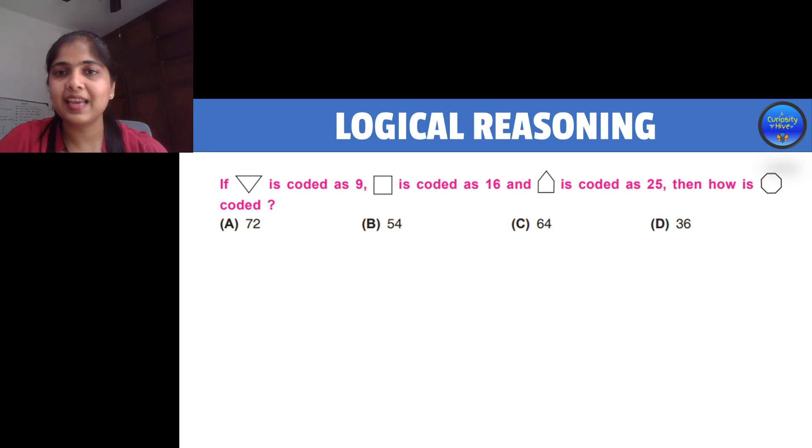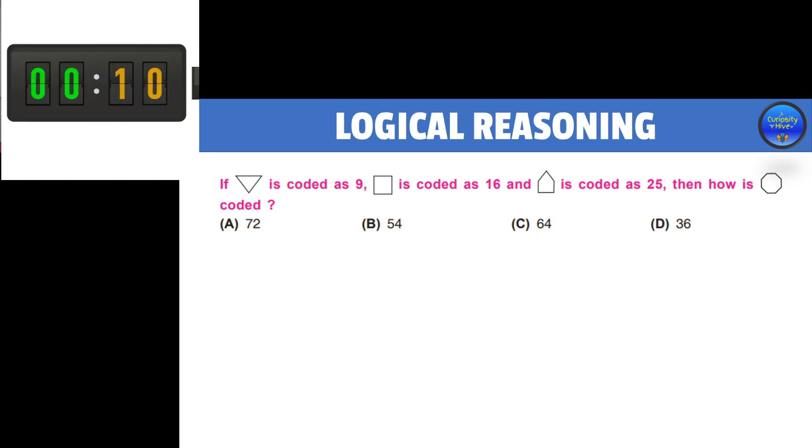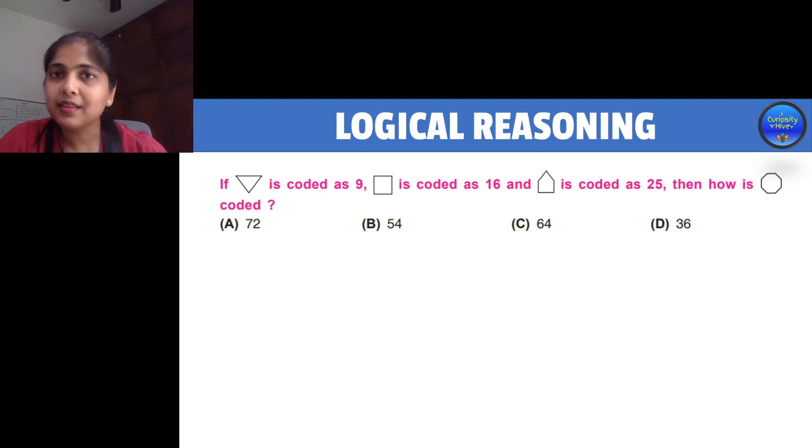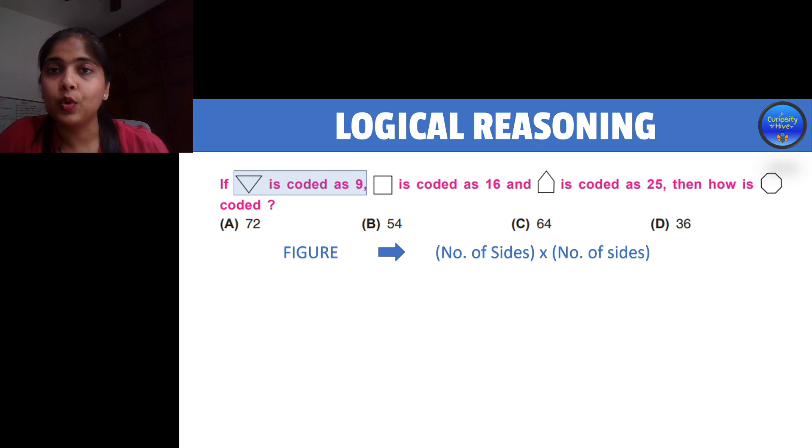Let's head to the next and final question in this section. In the relationship questions such as these, you should be able to establish a relation which holds good for all of the number examples given. If you notice carefully, the relationship here is the figure and the sides of the figure multiplied to itself, and that is how the coding is done.